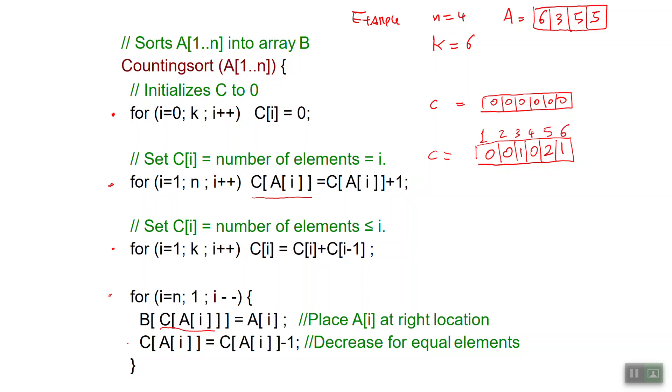Then in the third for loop I'm going to keep the running sum to set C to be the number of elements which are at most i. So at the beginning I do 0 plus 0 I get 0. Then I do 1 plus 0 I have 1. Then 1 plus 0 I have 1. Then I have 2 plus 1 and I have 3 and finally 4. This will be the result of the array C at the end of the third for loop.